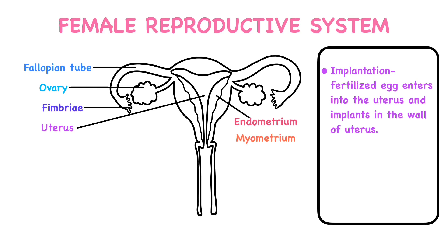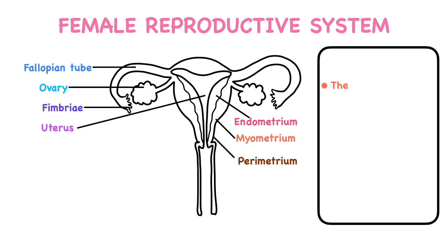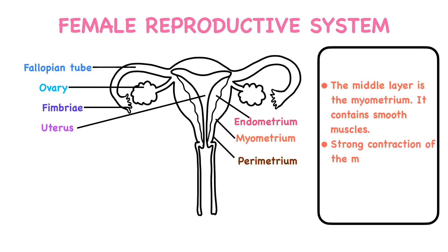The wall of the uterus consists of three layers. The innermost layer is the endometrium, which contains many glands and blood cells. The middle layer is the myometrium, which contains smooth muscles, so strong contractions of the myometrium occur during childbirth. The next layer is the perimetrium, which is the outermost layer of the uterus.